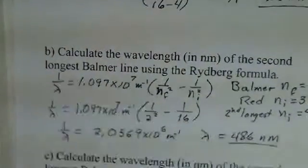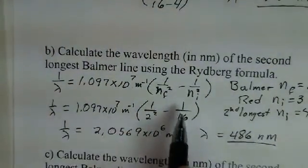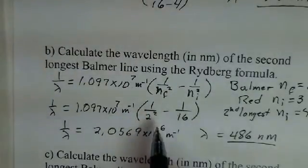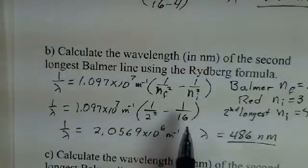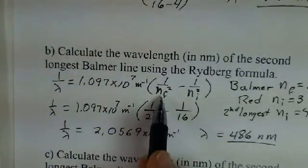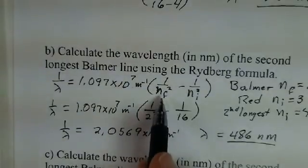And now I'm confident that I have the correct final result, 486 nanometers in agreement with Balmer's formula, but another empirical formula. This formula has more applications because it covers not just the Balmer series in the visible wavelengths, but it also covers the Lyman series in the ultraviolet. Use a 1 for n final.